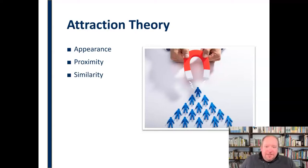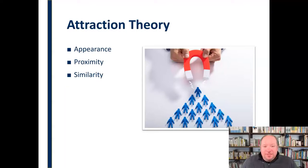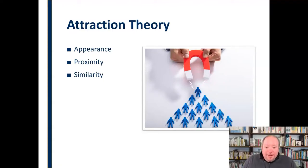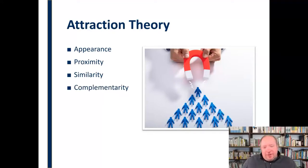Similarity is an important aspect of attraction theory. We like people who are like us — people who like the same things we do, who have the same goals and are headed in the same direction. Similarity can be an important factor in attraction. But the flip side of that is that we also like people who are different from us, who complement us.